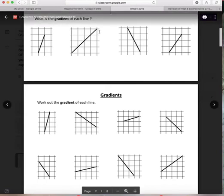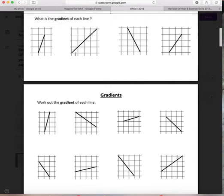Here you have a rise of four, one, two, three, four. For every four across, one, two, three, four. So that's four divided by four would give you a gradient of one.